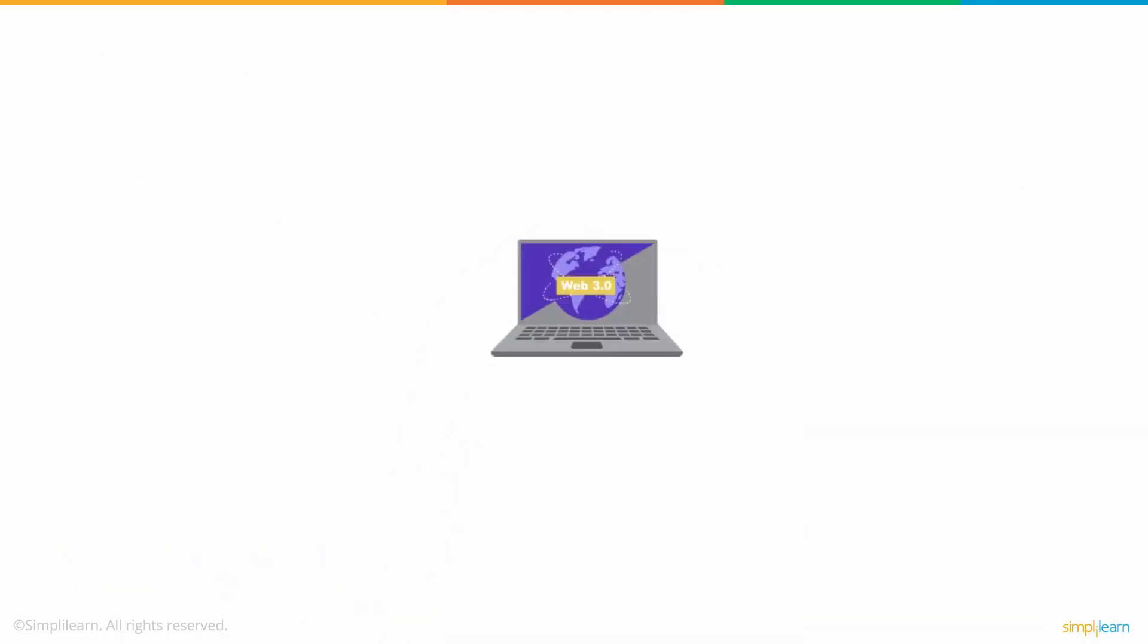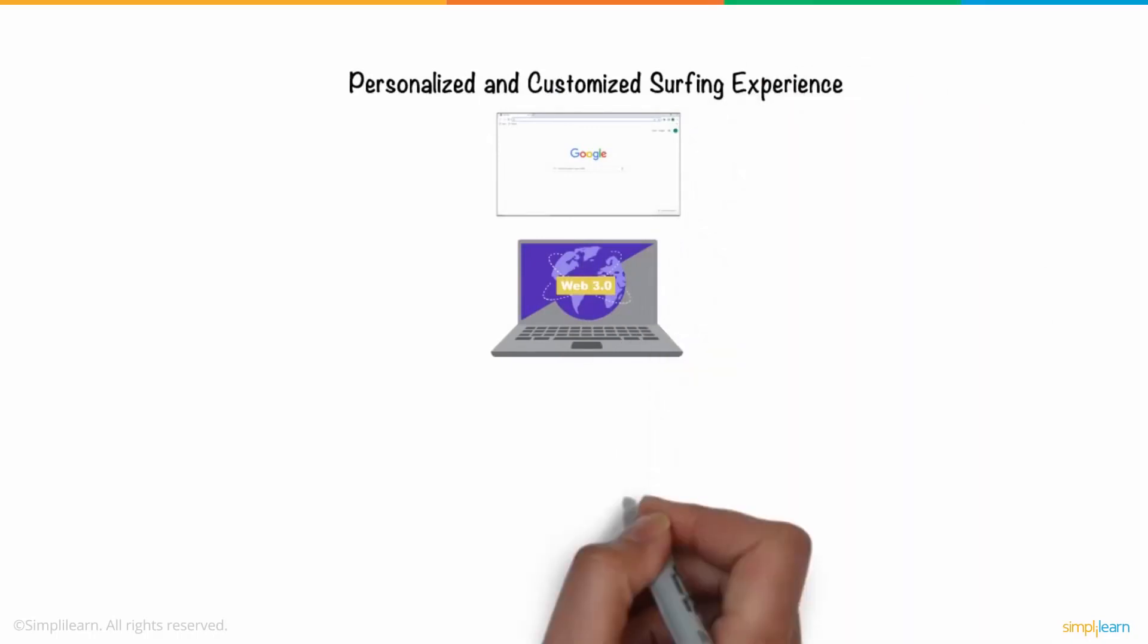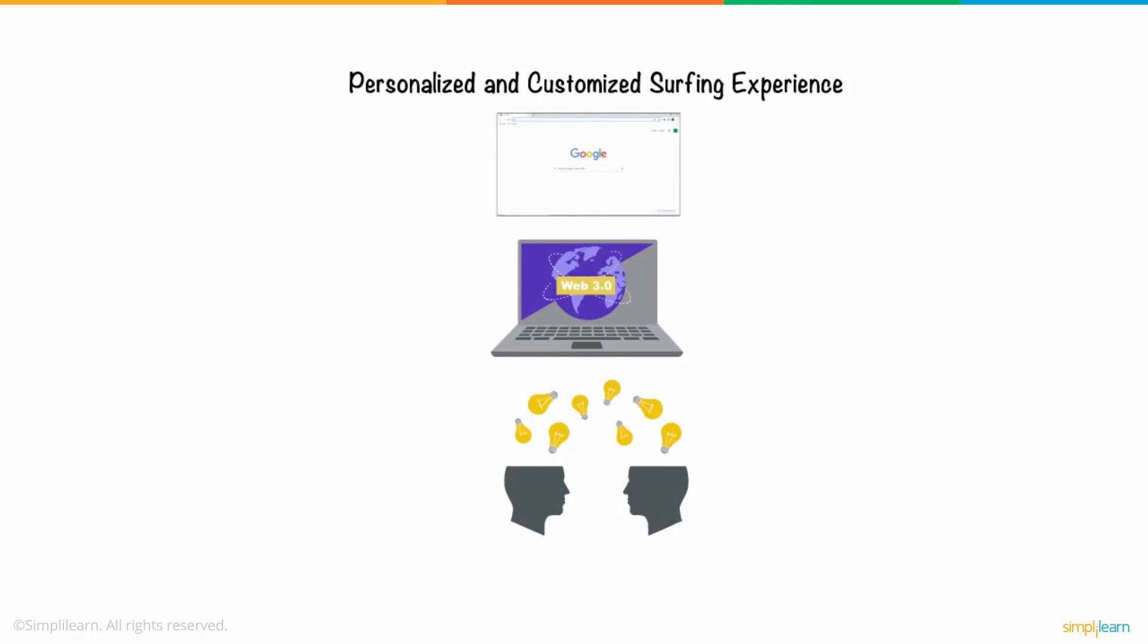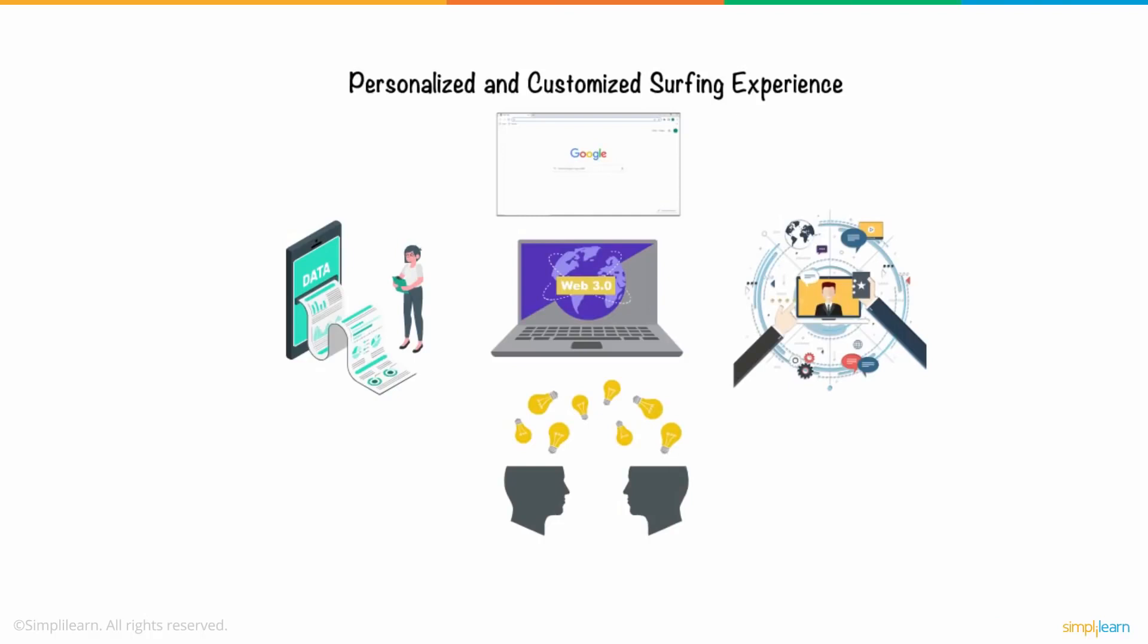Web 3.0 will offer a more personalized and customized surfing experience and a smarter and more human-like search assistant and other decentralized benefits, all of which are believed to contribute to a more fair web. This will be accomplished by giving each user control over their data, resulting in a richer overall experience.